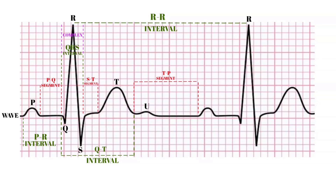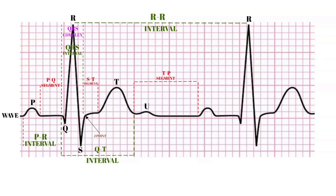A complex is the combination of multiple waves grouped together. The only main complex on an ECG is the QRS complex. There is only one point on an ECG termed the J point, which is where the QRS complex ends and where the ST segment begins. The main part of an ECG should contain a P wave, QRS complex, and a T wave.